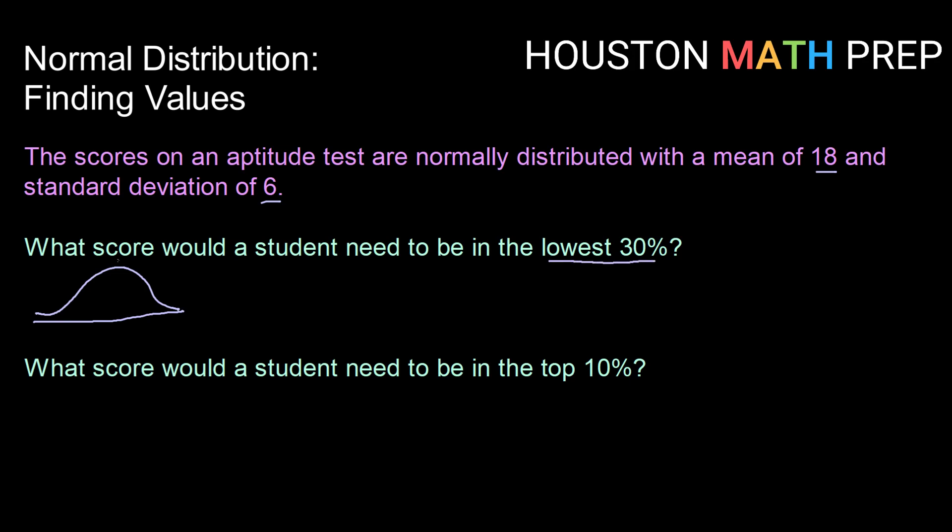So if I want the lowest 30%, keeping in mind that my mean will always be at 50%, 30% would likely be about here. So I'm definitely expecting a value that is below the mean, below 18.